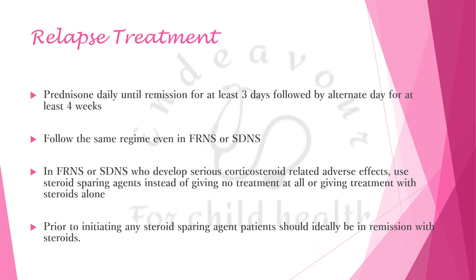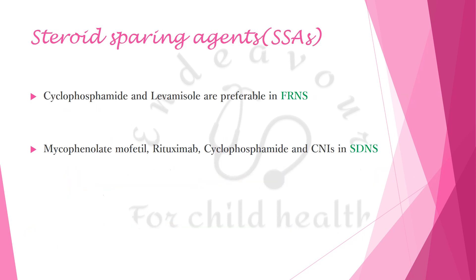For treatment of relapse, give prednisolone daily until remission for at least 3 days, followed by alternate day for at least 4 weeks. Follow the same regimen even in frequently relapsing or steroid-dependent nephrotic syndrome. However, children who develop serious corticosteroid-related adverse effects should receive steroid-sparing agents instead. Prior to initiating any steroid-sparing agent, patients should ideally be in remission with steroids themselves. Cyclophosphamide and levamisole are preferable in frequently relapsing nephrotic syndrome, while mycophenolate mofetil, rituximab, cyclophosphamide, and then calcineurin inhibitors in that order are preferred in steroid-dependent nephrotic syndrome.